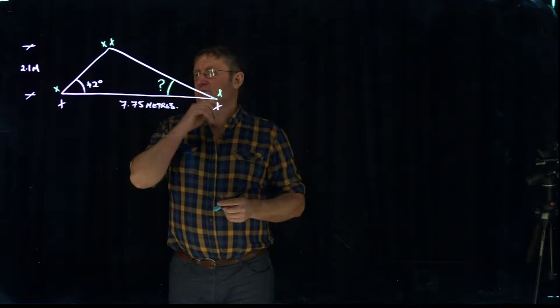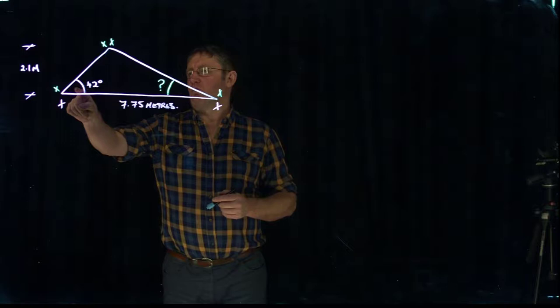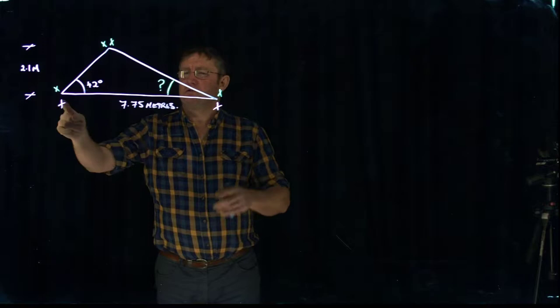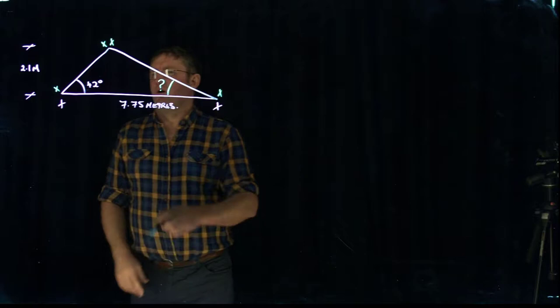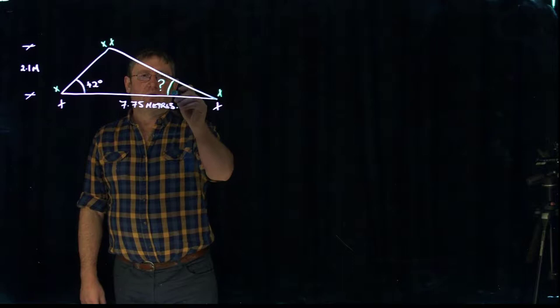And you want to work out some detail that's missing. So this internal angle in this corner here is 42 degrees. The total height of the truss is 2.1 meters and the overall length across the base is 7.75 meters. What I want to know is this length down here, this length down here, and what this angle is here.